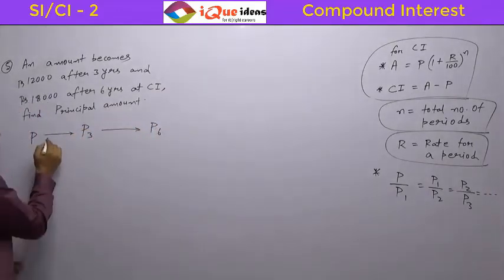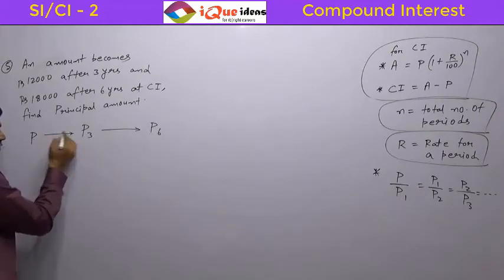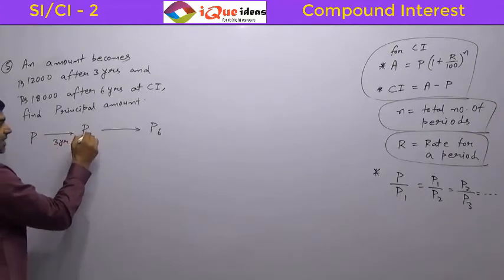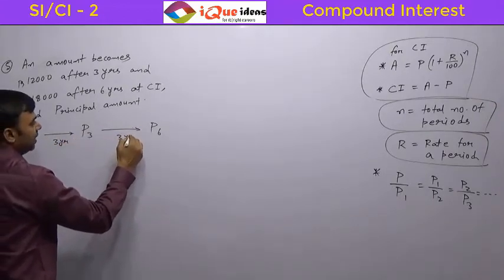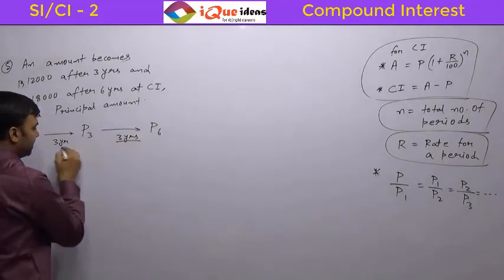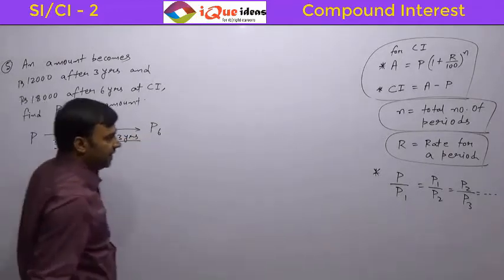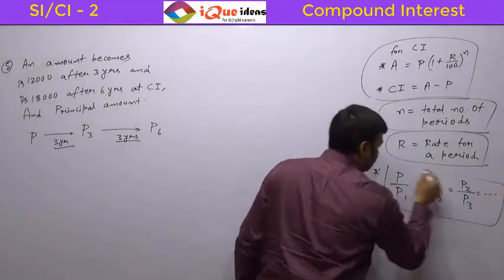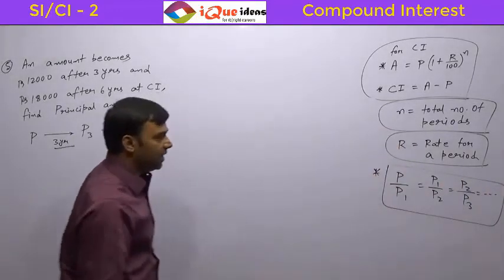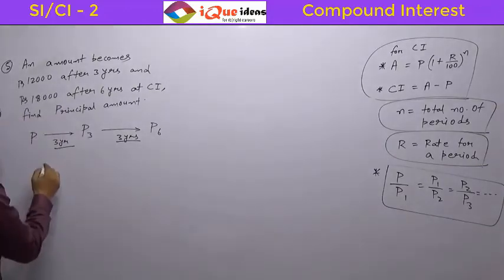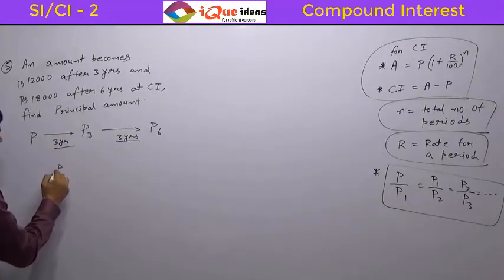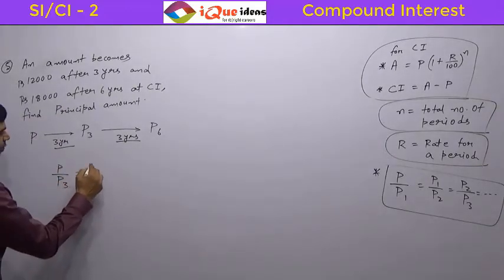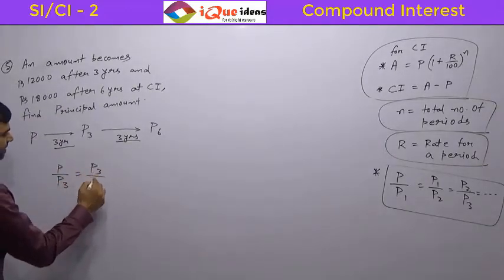The gap from P to P3 is 3 years, and from P3 to P6 is also 3 years. So, if the gap is the same, we can apply this property that the ratios are going to be constant. That means P upon P3 should be equal to P3 upon P6.